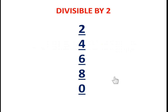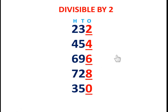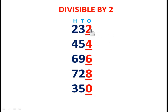What is the rule for divisibility by two? The digits involved are two, four, six, eight, and zero — so five numbers in total. For example, take numbers like 232, 454, 696, 728, and 350 — these are all three-digit numbers where the ones place digit is 2, 4, 6, 8, or 0 respectively.